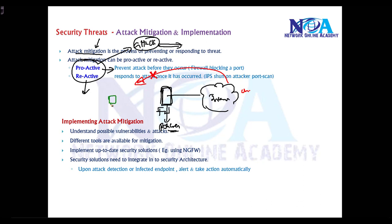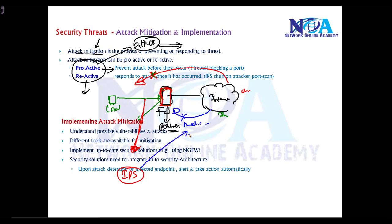We can restrict users to specific traffic on the internet by using dedicated devices like firewalls to control traffic flow between the LAN and internet. We can also configure IPS (Intrusion Prevention System) devices or firewall policies to monitor traffic — and if suspicious or malicious traffic is detected, it should be dropped automatically. Reactive mitigation means responding after an attack has already occurred.